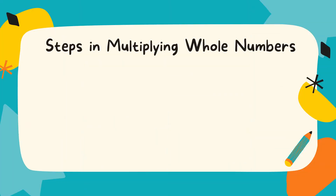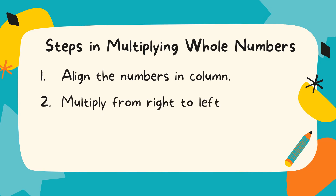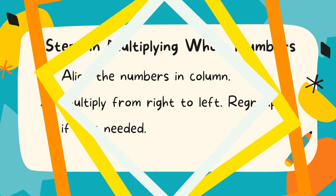These are the steps in multiplying whole numbers. Number 1, align the numbers in column. Number 2, multiply from right to left. Regroup if it is needed.